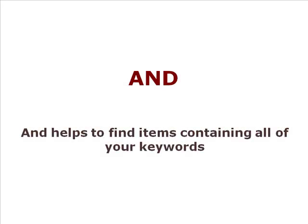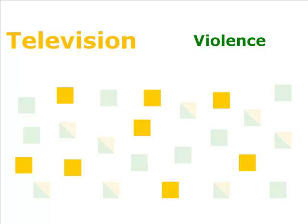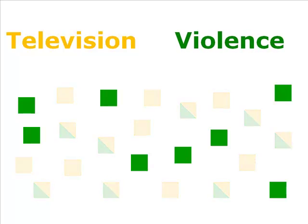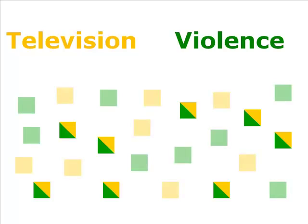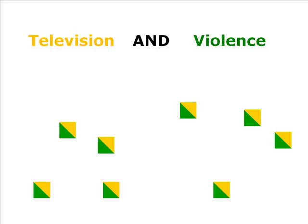Let's start by looking at the AND Boolean operator. AND helps you to find items containing all of your keywords. The colored blocks represent items in a database. The yellow blocks are items discussing only television, and the green blocks are items discussing only violence. The two-tone blocks are items discussing both concepts. If you are researching how television can heighten the level of violence in people, you could use the AND operator with these two keywords. Your results would be just the two-tone blocks, since they are the only items containing both of the keywords.